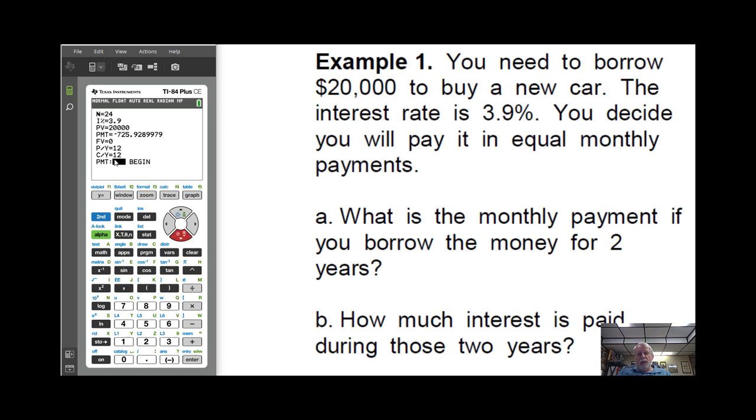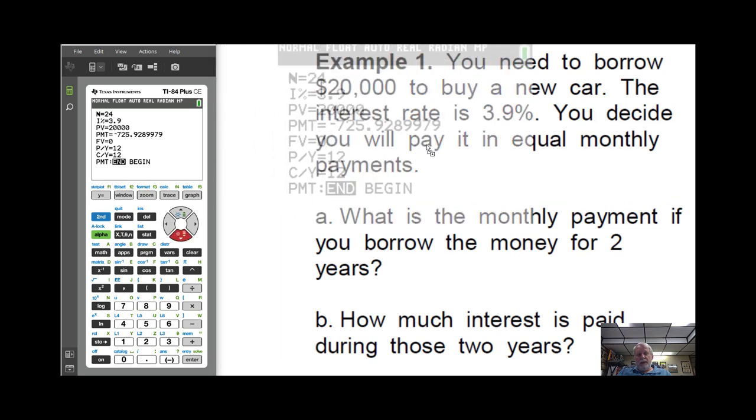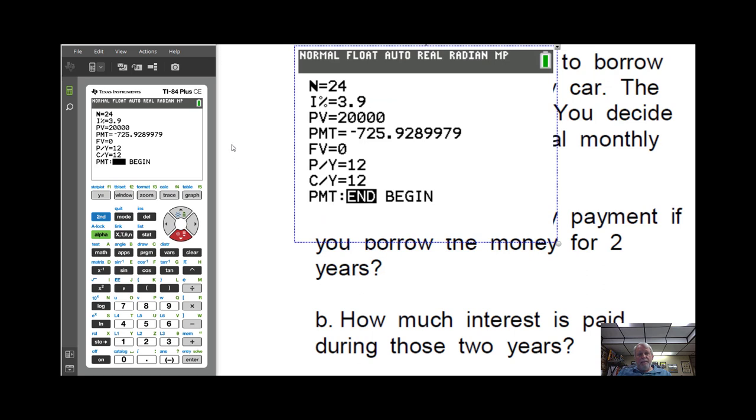And payment is always at the end for our purposes. So we'll just go ahead and put it at the end. Now, once you have those numbers, there's one value that we don't know, and that is the payment. You'll notice it's negative here because all the other numbers were positive. So you go to the value that you want to figure out,